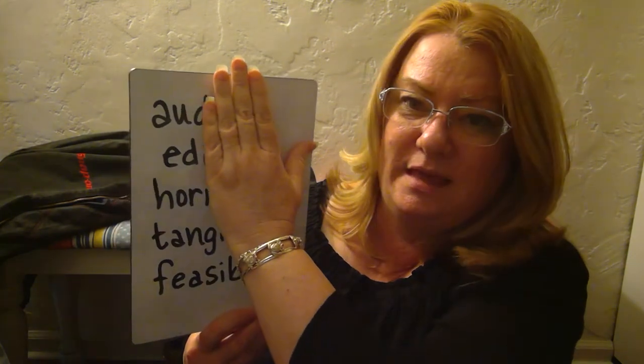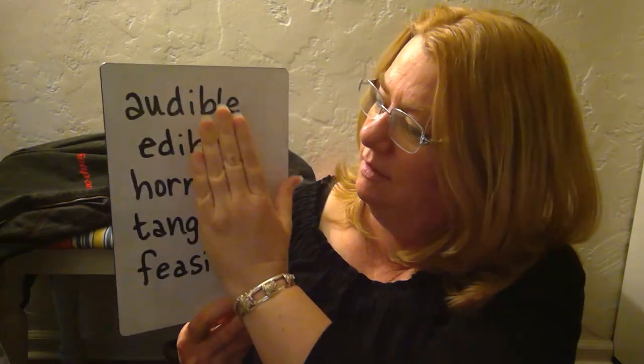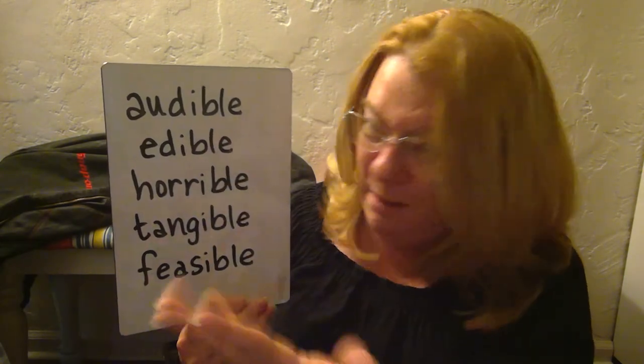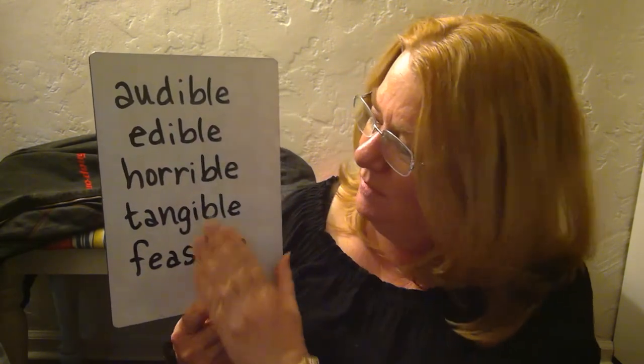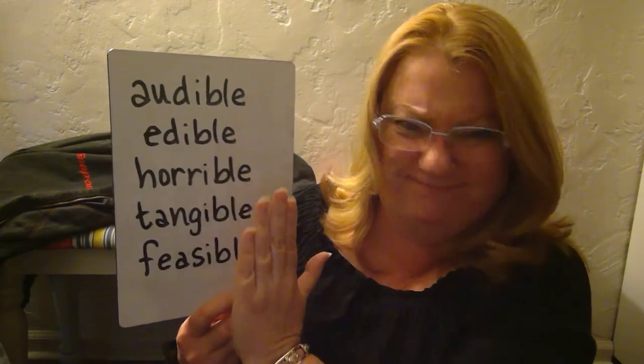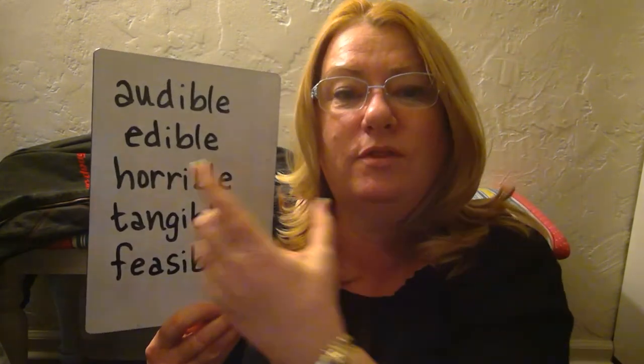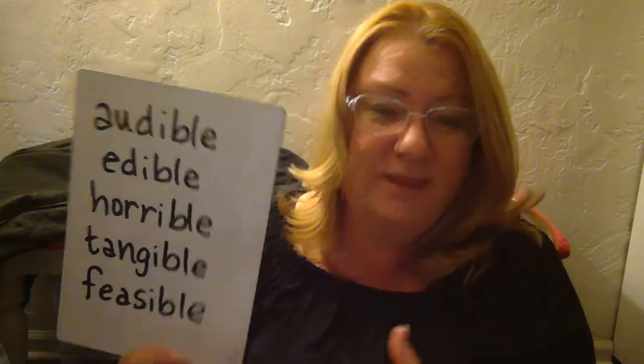If we take off the -ible, what's left is not a real word: 'ed' is not a word, 'horror' — no, it's part of a base. 'Tang' — no. 'Fees' — no. So -ible follows bases that don't make a real word on their own. That's the difference between -able and -ible and how you can tell them apart.